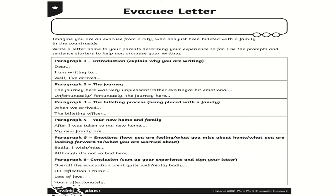Paragraph five is more about your thoughts and your feelings — your emotions. What are you going to miss about home? What are you looking forward to? What are you worried about now that you've got into your new home and you're settled? Again, there are some sentence starter ideas for you there.